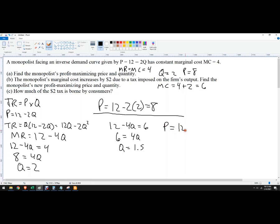And then we're going to plug this into our demand curve to get the price. So price equals 12 - 2(1.5). That's 3, so price is 9. So now the price is 9.